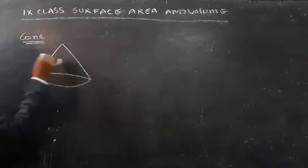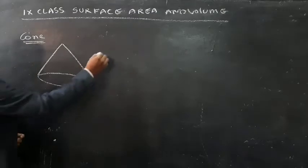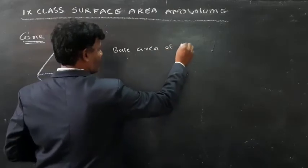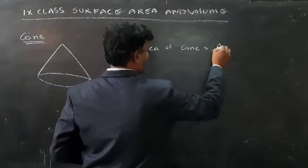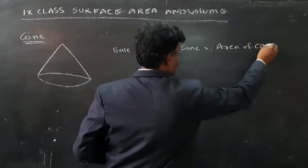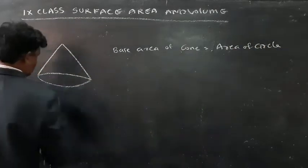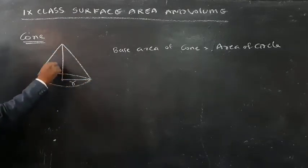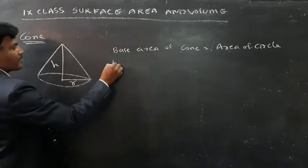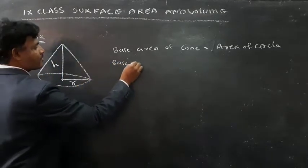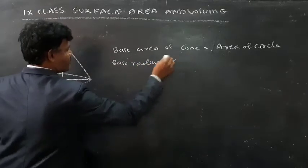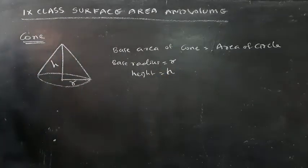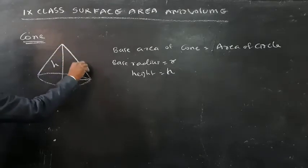The base of the cone is in the shape of a circle. The base area of the cone is the area of a circle. Here I am taking the base radius as R and the height of the cone as H. The top of the cone is called the apex. This part is called the slant height.